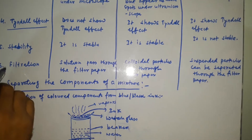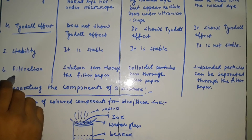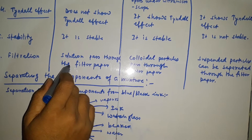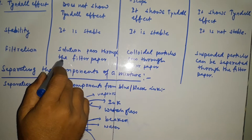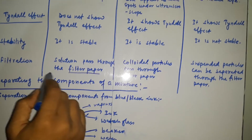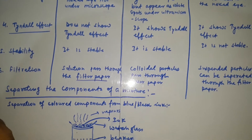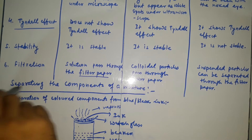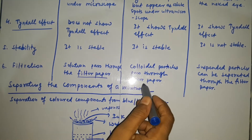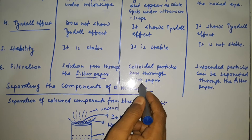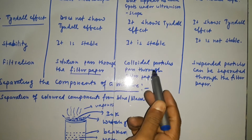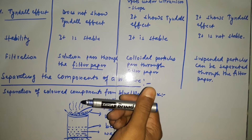The next property is filtration. The solution particles are very small in size, so they can pass through filter paper. It means the components of solution cannot be separated with the help of filtration. Colloidal particles also pass through filter paper and they also cannot be separated with the help of the filtration process.